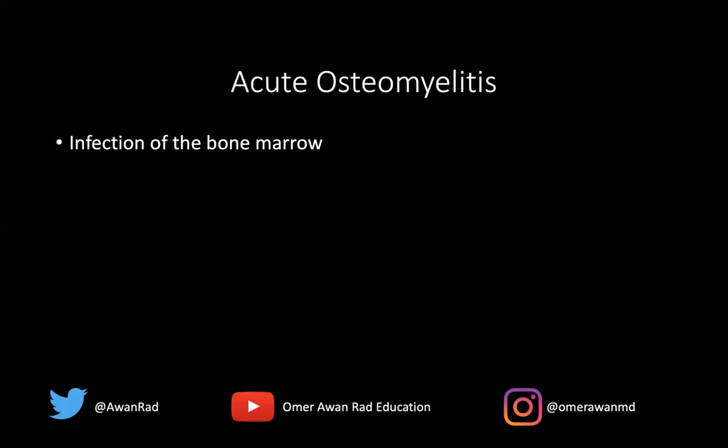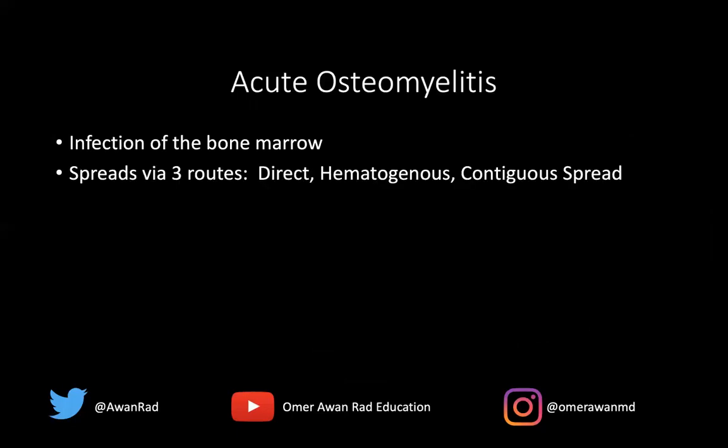Acute osteomyelitis reflects infection of the bone marrow. There are three routes: direct, hematogenous, and contiguous spread. Direct is when you have direct inoculation of infection from surgery or iatrogenic injury into the bone. Hematogenous is usually inside-out — the infection starts within the bone marrow, then travels to the cortex (osteitis), then the periosteum (periostitis), then into the soft tissues where it can result in an abscess or myositis, and then into the subcutaneous tissues causing cellulitis, and possibly to the skin surface.